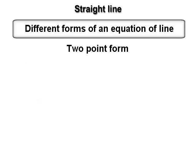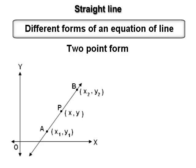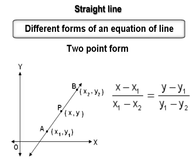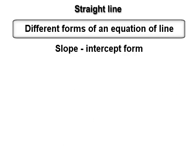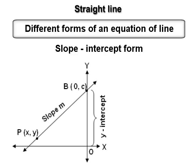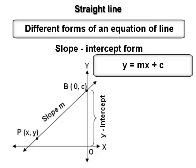Form 2 — Two-point form: the equation of the line passing through the points (x₁, y₁) and (x₂, y₂) is given by (x − x₁)/(x₁ − x₂) = (y − y₁)/(y₁ − y₂). Form 3 — Slope-intercept form: the equation of the line having slope m and y-intercept c is y = mx + c.